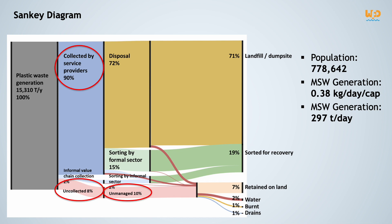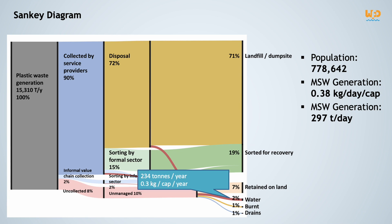So where does unmanaged plastic waste end up? The Sankey diagram gives us the answer: 7% of plastic waste ends up on land, 2% in water systems, 1% is burnt, and 1% finishes in drains. The 2% of plastic waste ending up in water systems is equivalent to 234 tonnes per year being thrown in rivers or in the sea, which corresponds to 0.3 kg per person per year.